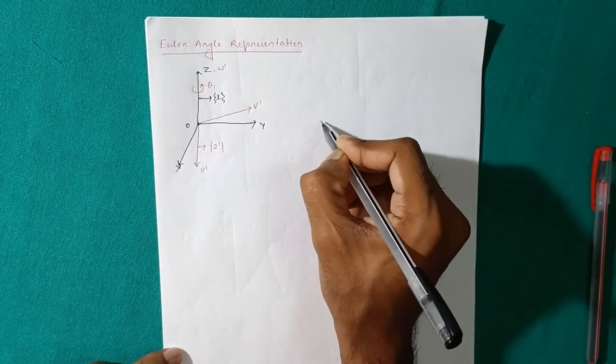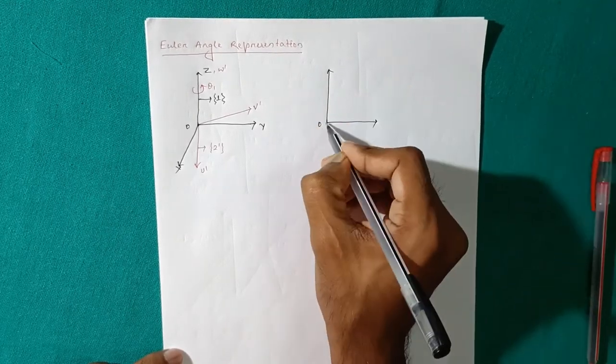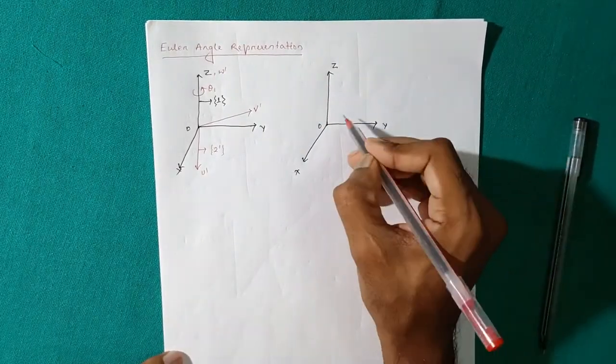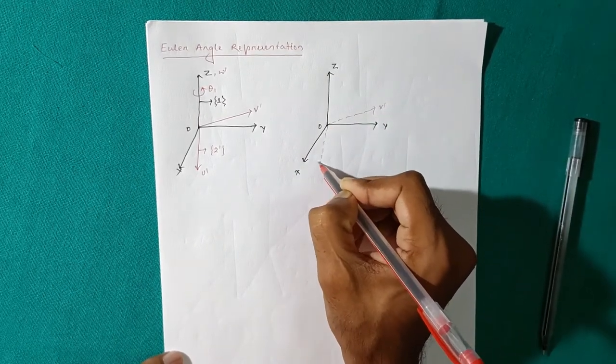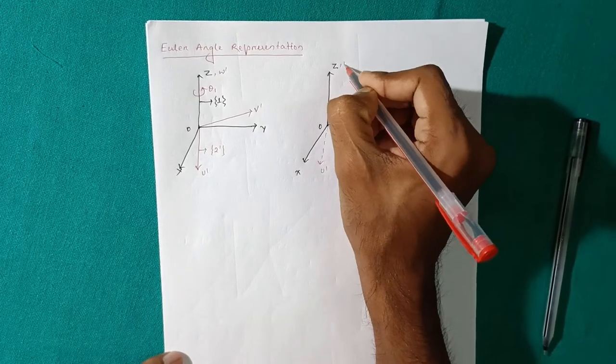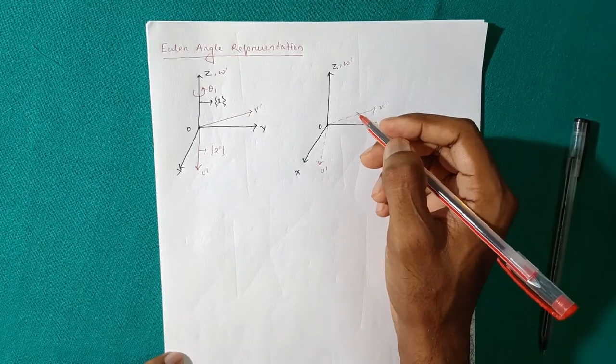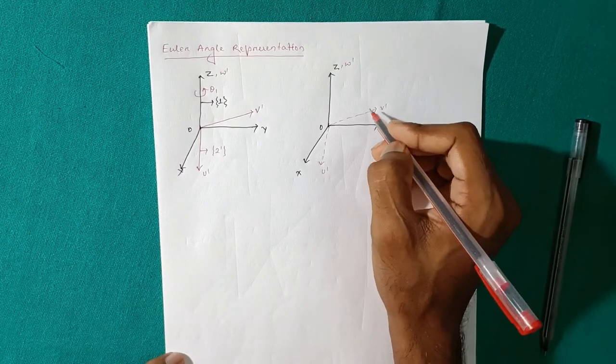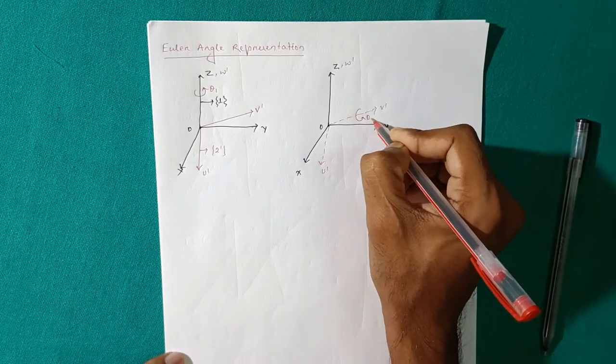So for the second step, this point is O and three axes: this is x, this is y, this is z. So what we have got before: this is V prime, this is U prime, and here only this is W prime. So in second step, the angle of rotation will be provided on the new axis here, that means on V prime, so the angle of rotation will be provided here, that is theta2, clear?